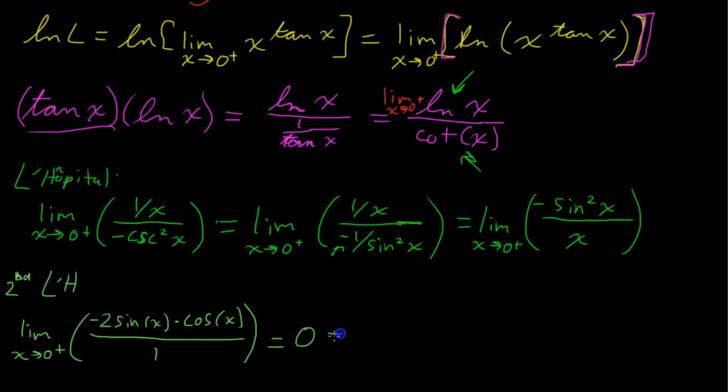That 0, remember, is, we were just talking about the natural log of the limit. So that is natural log of L. So, we have to apply a little property, and that is e to the natural log of L just equals L. So, in other words, e to this value of 0, I'll color-code that, equals, what we wanted was our L. And we had that in blue originally. So, e to the 0 is our limit L, and that is 1.